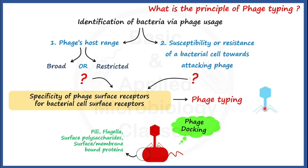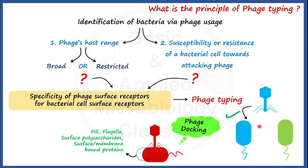Let's understand this with a picture. Suppose we have a phage of Staphylococcus aureus, shown in blue. When this phage is mixed with two different bacterial cells — one of Staphylococcus aureus and one of Salmonella typhi — phage docking will only occur with Staphylococcus aureus, because the phage recognizes its surface receptors. When it comes into contact with Salmonella typhi, phage docking will not occur because the phage cannot recognize the surface receptors on Salmonella typhi. This forms the basis for detecting and identifying a particular bacteria using a specific phage.